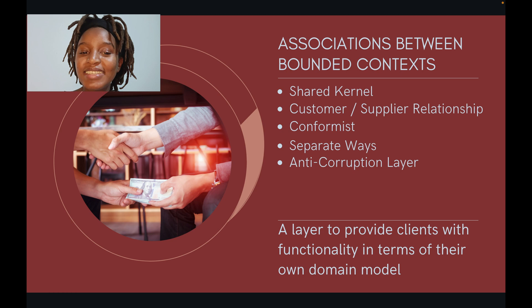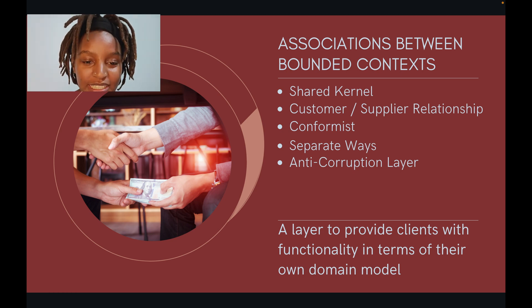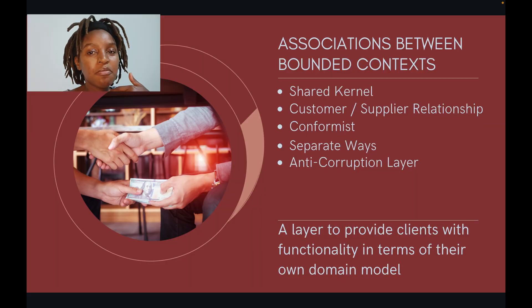The next context mapping method is the anti-corruption layer. This is a layer that provides clients with functionality in terms of their own domain model. You want a solution where you only get what you're seeking, so you place a layer between your external or legacy system and your own system. It can be bidirectional, but ideally it's there to protect your system from corruption from the other side.